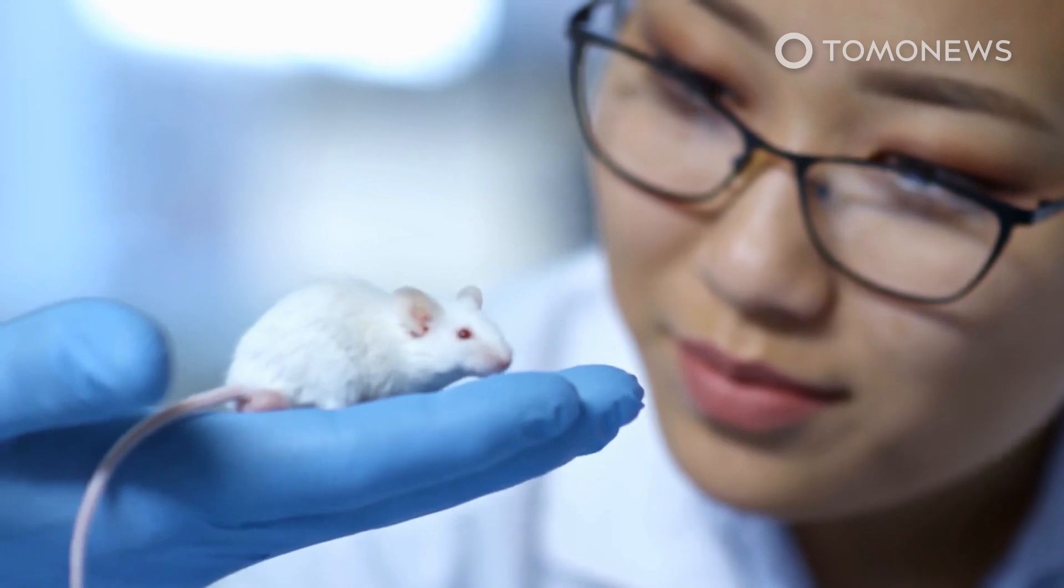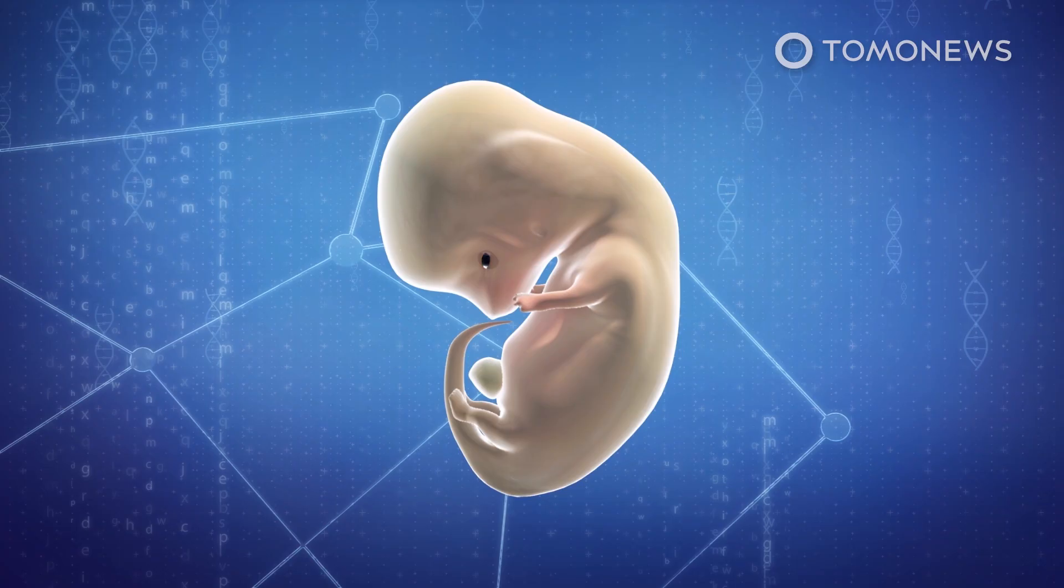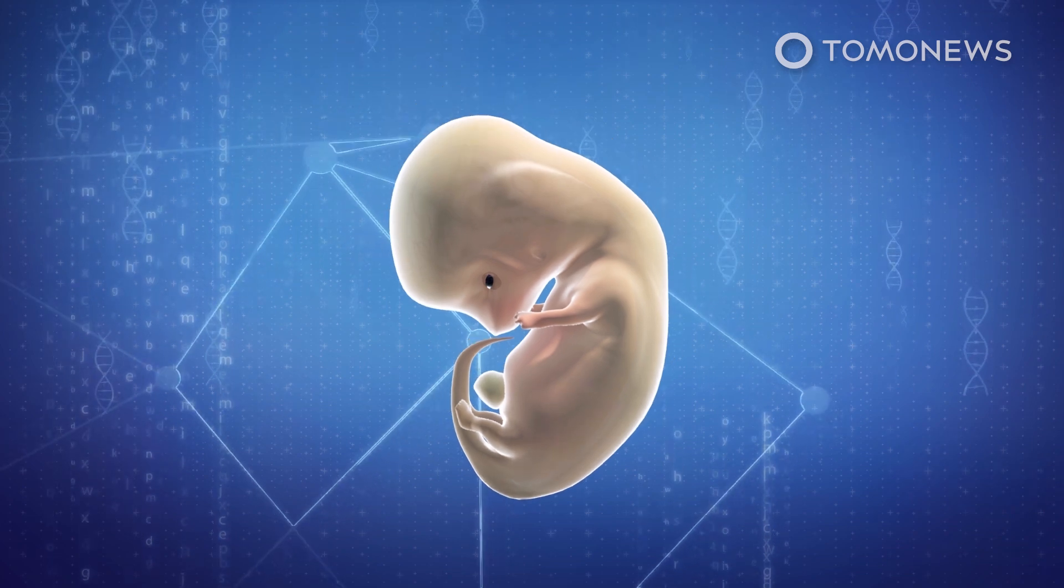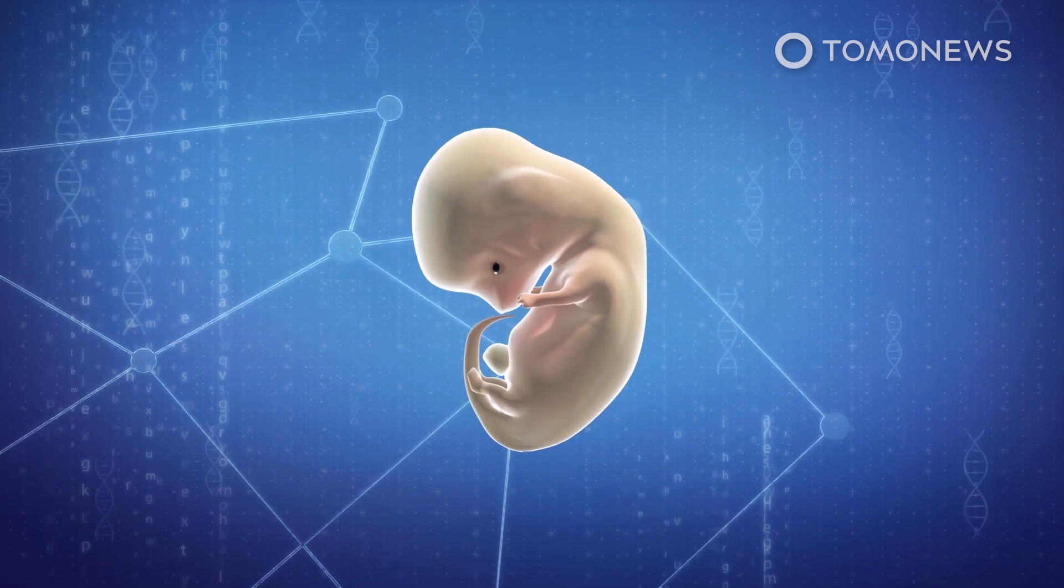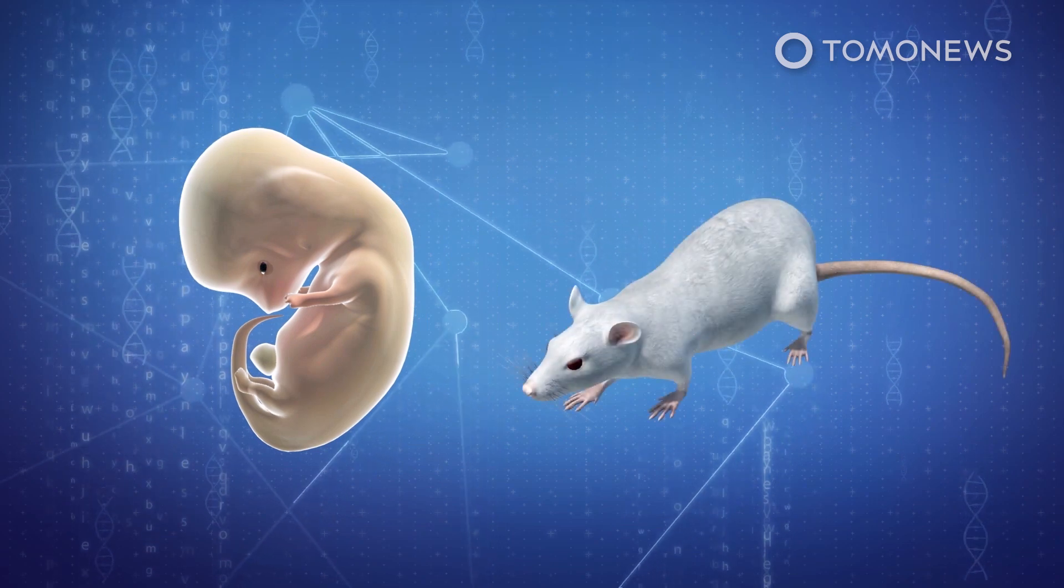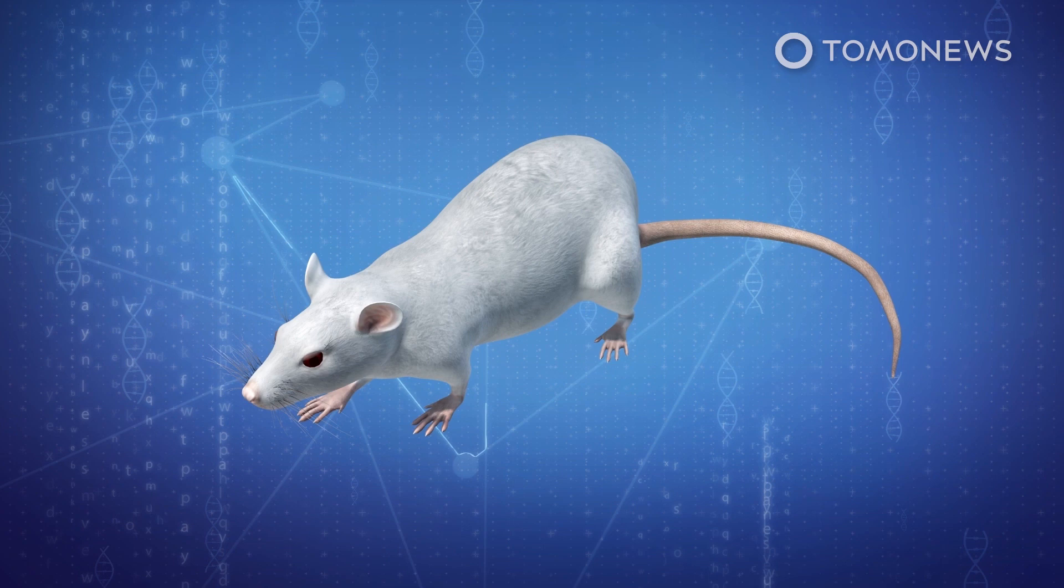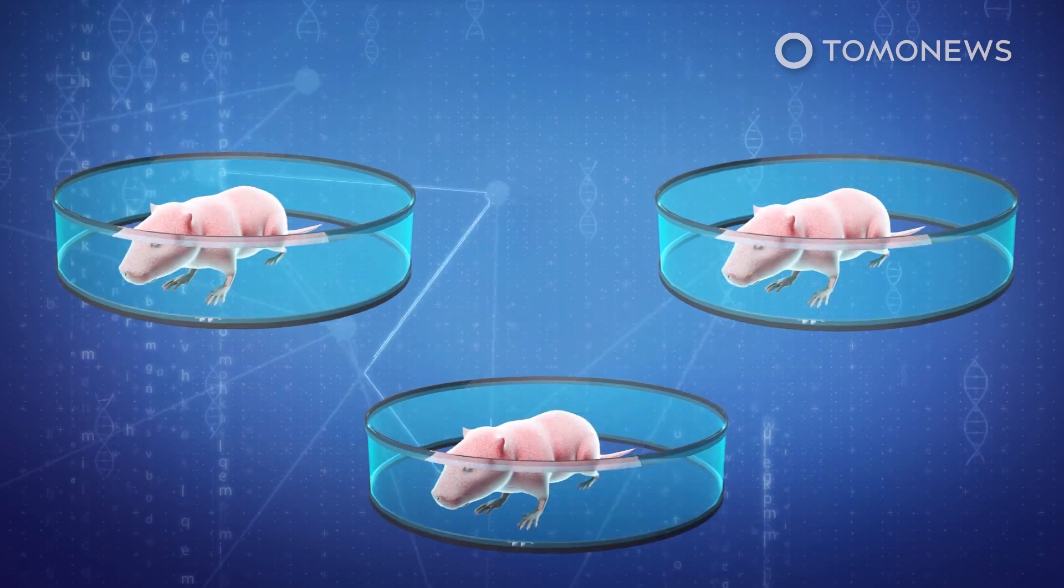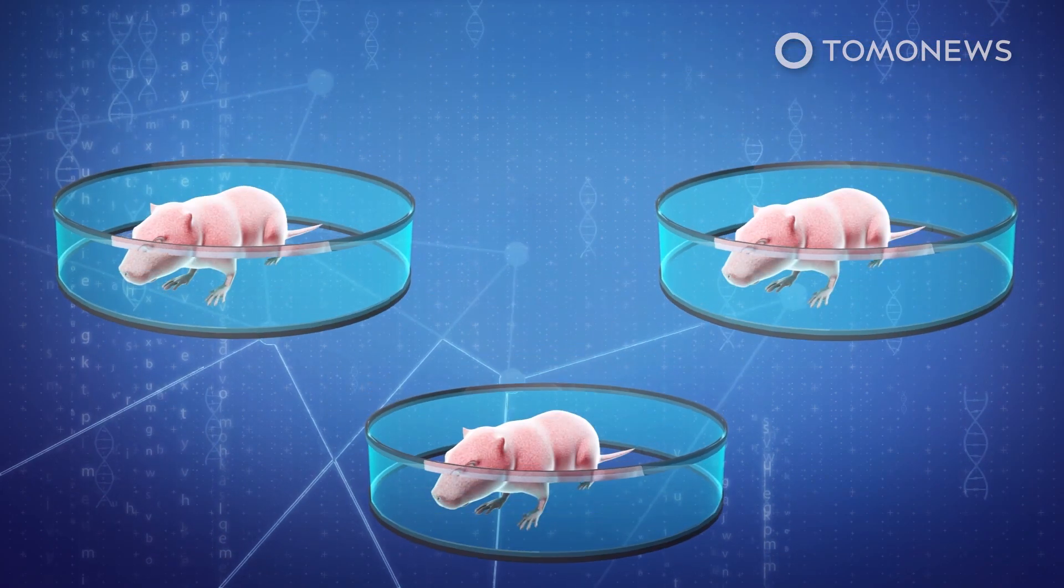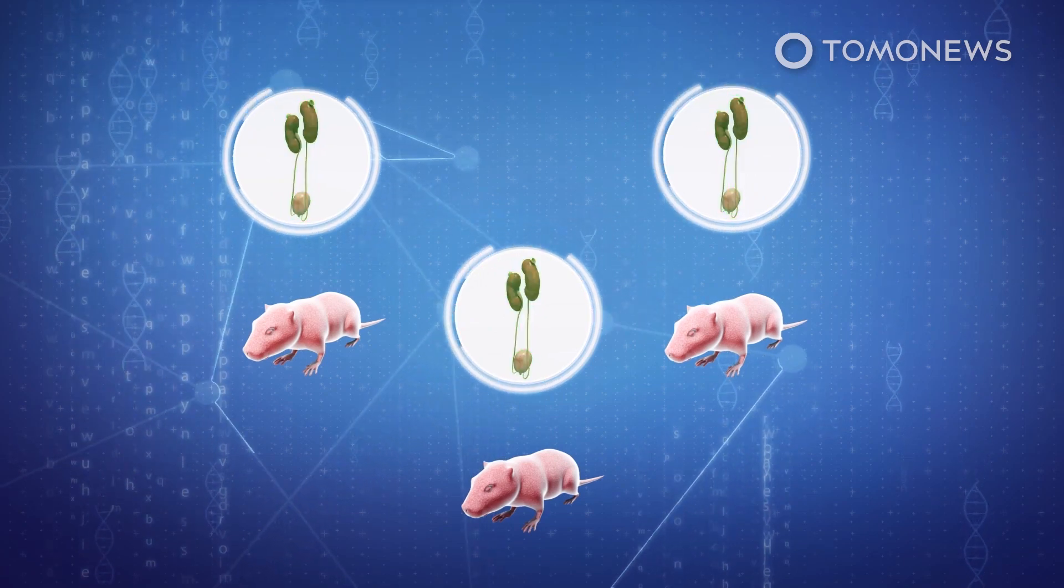In 2019, researchers successfully grew kidneys in rats by implanting stem cells from mice. According to a paper published in the journal Nature Communications, researchers selected rat embryos that were genetically modified to not develop kidneys and injected them with stem cells from mice. These embryos were then implanted into the womb of rats that would carry the pregnancy to term, and the rat embryos successfully grew kidneys. However, genetically modifying their genes to not grow their own kidneys caused them to lose their sense of smell, and due to this alteration, they did not suckle properly and died shortly after birth.